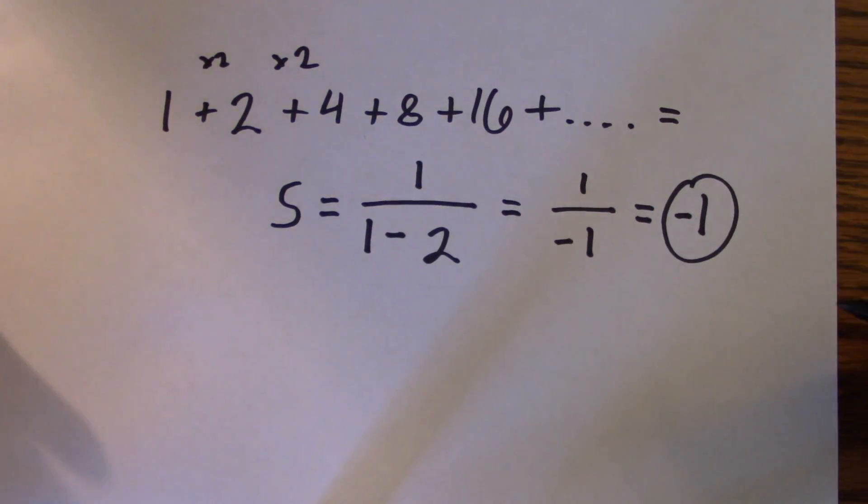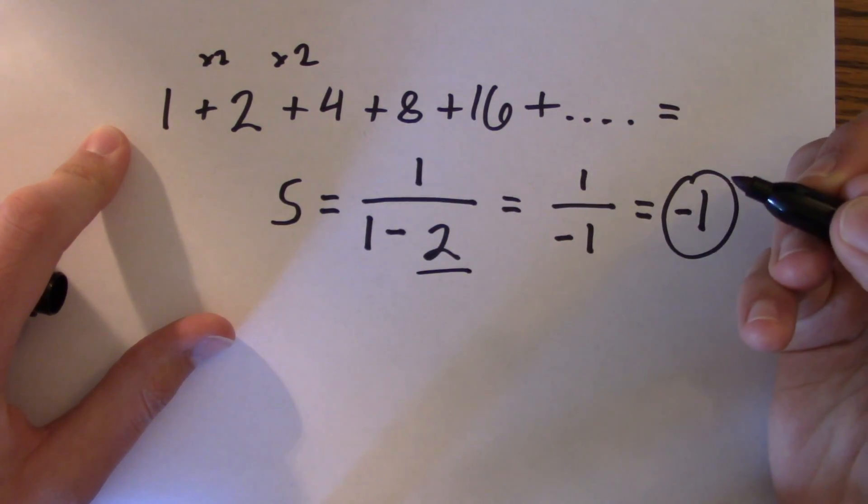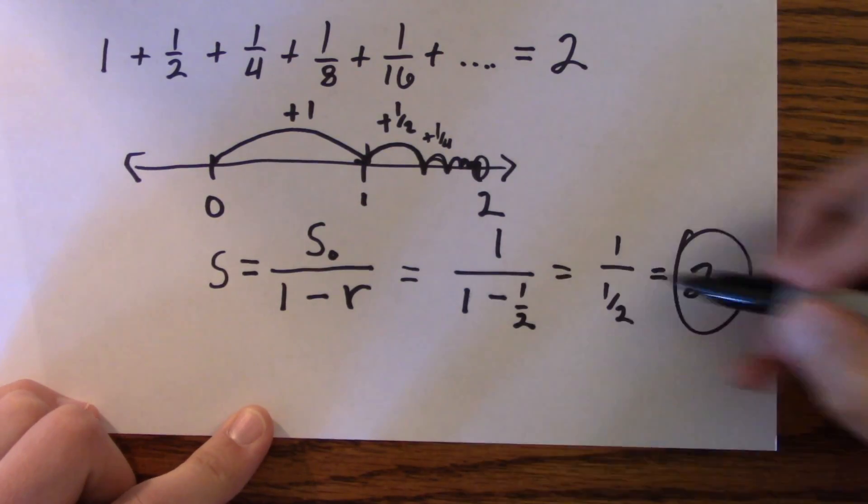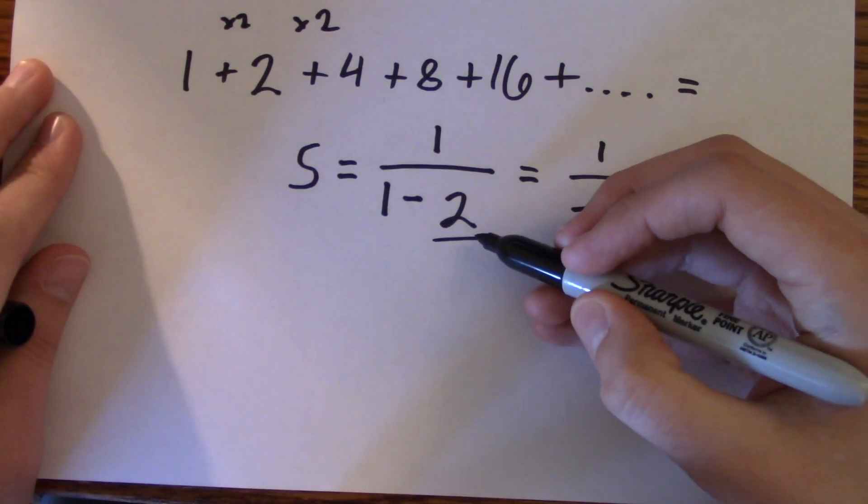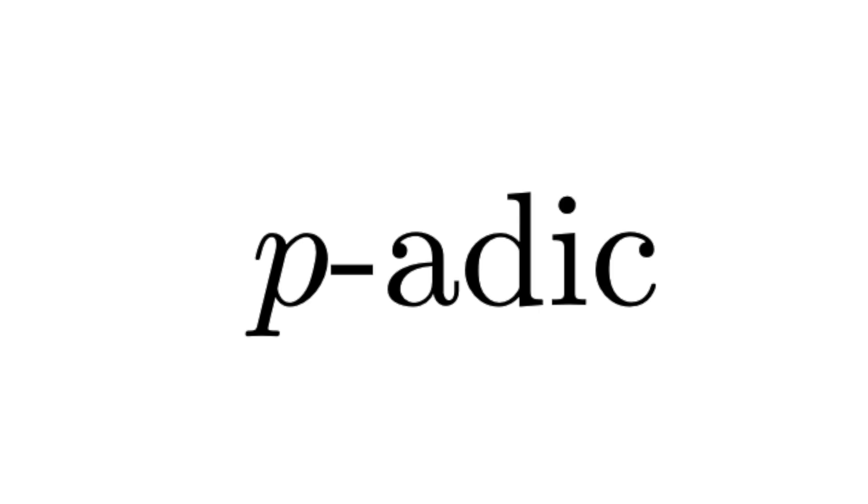The simple fix is to note that this formula only works when r is less than 1. But what if I told you there's a system of numbers where negative 1 really is the right answer? A system where if you add 1 plus 2 plus 4 plus 8 and so on, you really do get closer and closer to negative 1. That system is called p-adic numbers, where p stands for some prime — so you could have 13-adic, 7-adic, or 2-adic numbers. In this world, sizes, scales, and distances are all contorted. It's like the Alice in Wonderland of numbers. In the 2-adic system, for example, 4 is farther away from 5 than it is from 8.